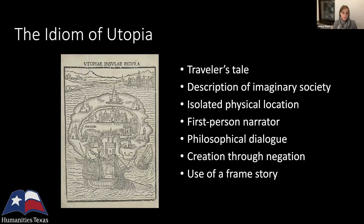As in the term utopia, which is a grammatical negation — a no-place — these worlds are always created through negation. Some feature of the author's world is negated or eliminated, and then the text explores the consequences of that removal. In Thomas More's utopia, private property has been eliminated, and the text explores everything that would be different if there were no private property. It's often really fun when teaching these stories to ask your students what's the most important thing that's been removed and what are the consequences of that removal.